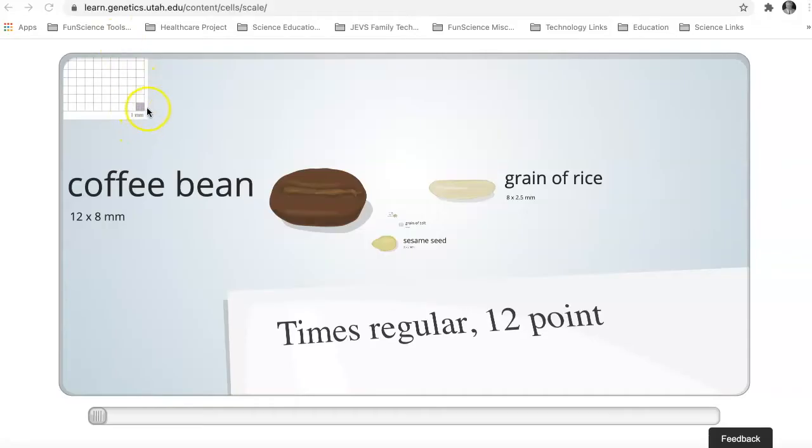Okay, so many of us know how big a millimeter is. So right here, we have on our scale, one millimeter. So the distance from here to here is one millimeter. And if a millimeter is that big, a coffee bean would be this big, a grain of rice would be this big, a sesame seed would be this big.